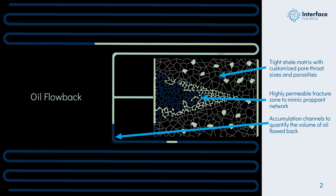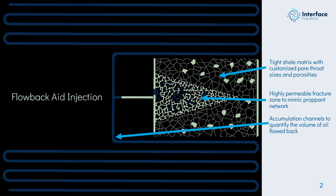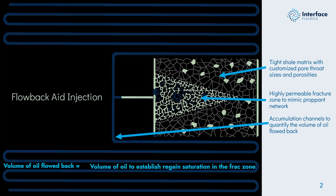The saturation of oil that's regained during the flow-back process in the porous media, plus any excess oil that's flowed through the chip accumulated in these channels for volumetric measurement — the sum of those two gives us the total volume of oil flowed back.